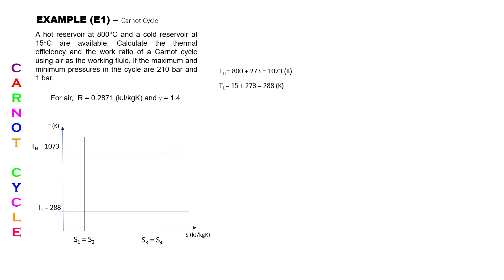Then you have two isentropic processes, so you draw both the isothermal lines and both the isentropic lines. Then you put in the points at each intersection. Most heat engines move in the clockwise direction, so you put in points 1, 2, 3, and 4 in clockwise direction.